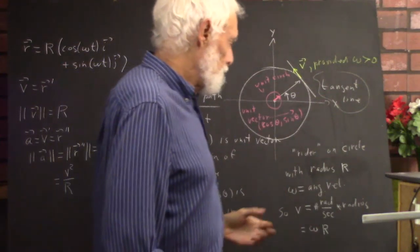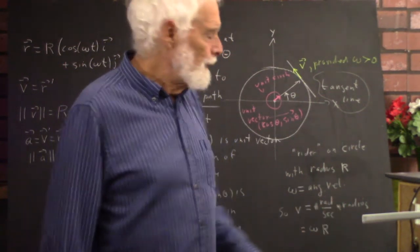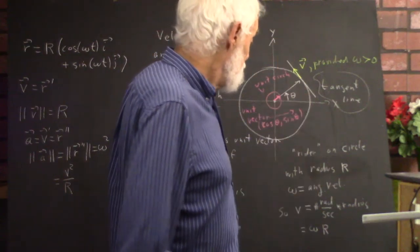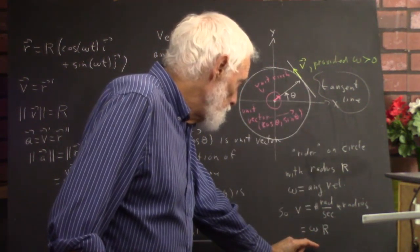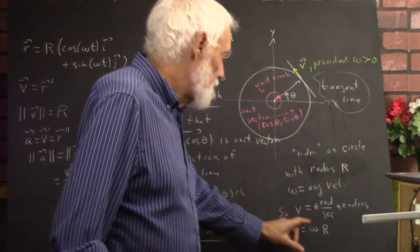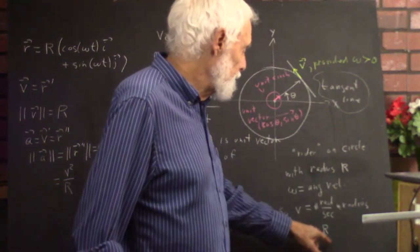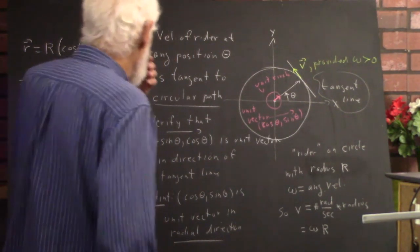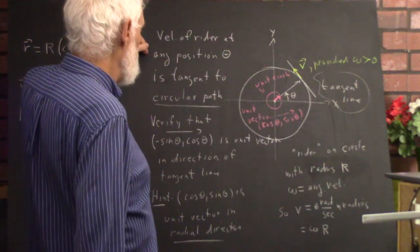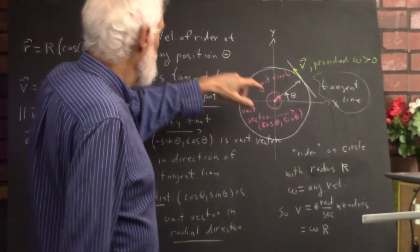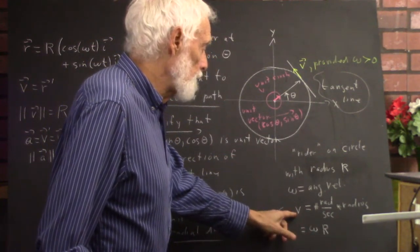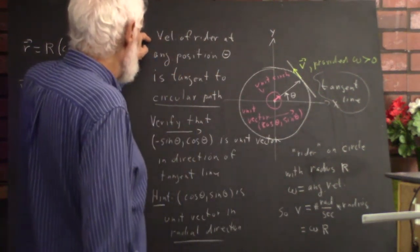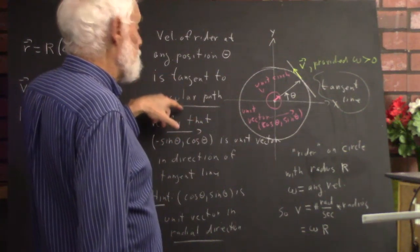The number of radians per second is omega and the radius is capital R, so the speed is omega times R. But this is speed, not velocity — it doesn't include the direction. The velocity of the rider at angular position theta is tangent to the circular path. A very small segment of the circular path looks like a straight line, and in the limit that direction becomes tangent to the circle, which is perpendicular to the radial line.